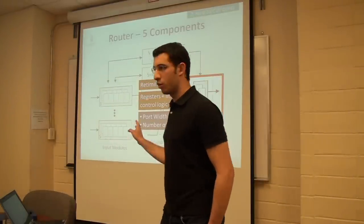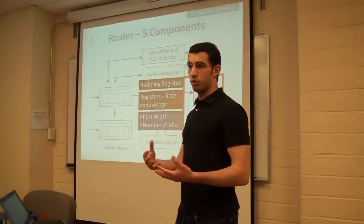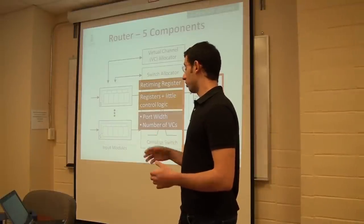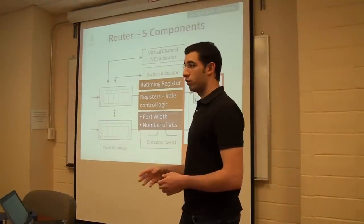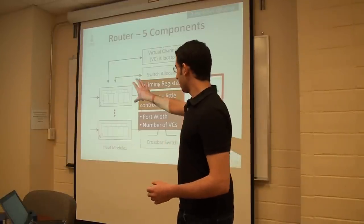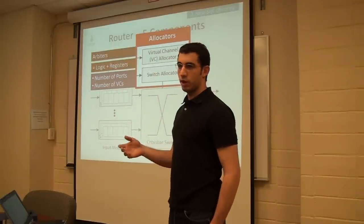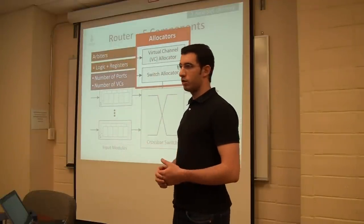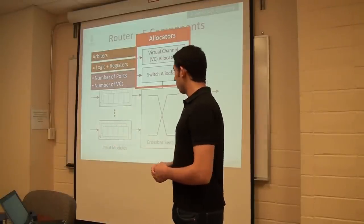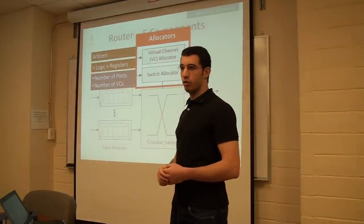The third component is the output module — an optional retiming register that makes the router run at a faster frequency — consisting of registers and some tracking logic. Its parameters are port width and number of virtual channels. The control unit — the allocators — is the fourth and fifth component, made up of arbiters that assign priorities to ports or virtual channels. The parameters affecting area and delay are number of ports and number of virtual channels.